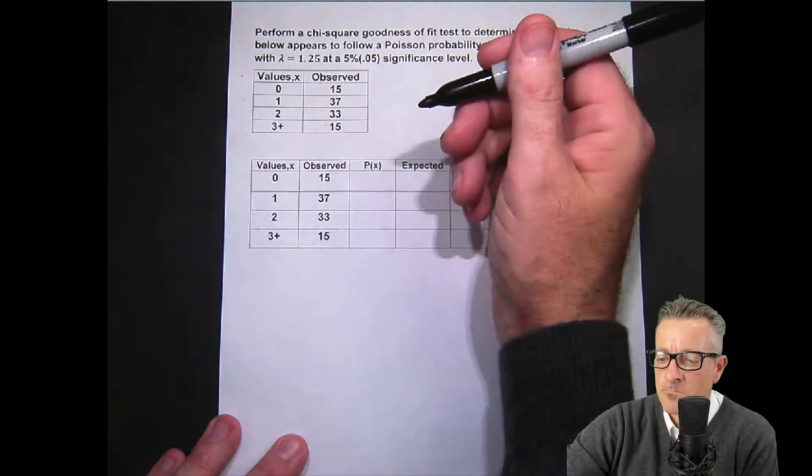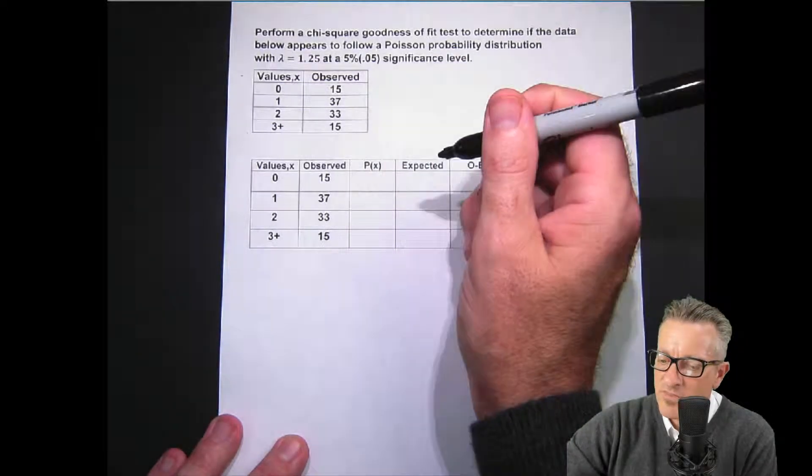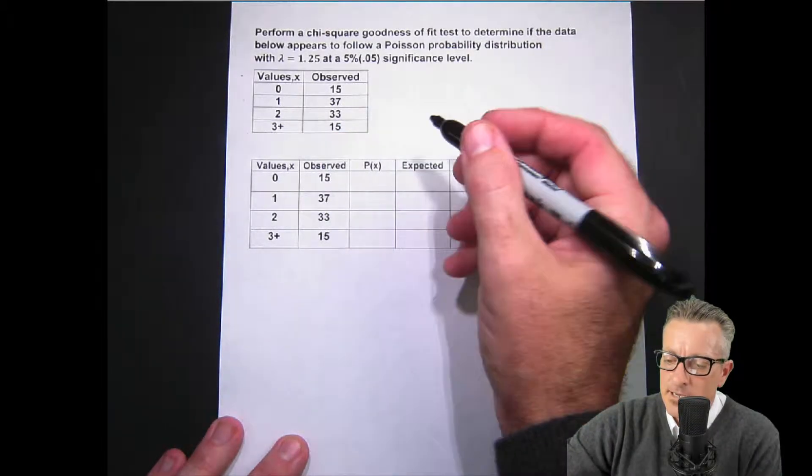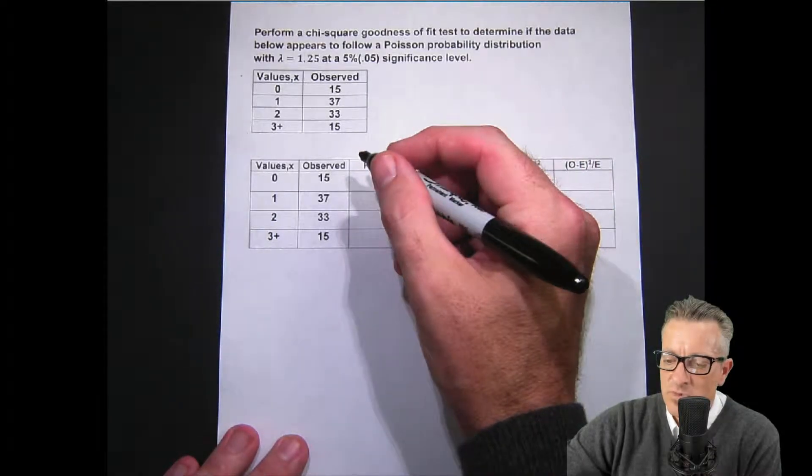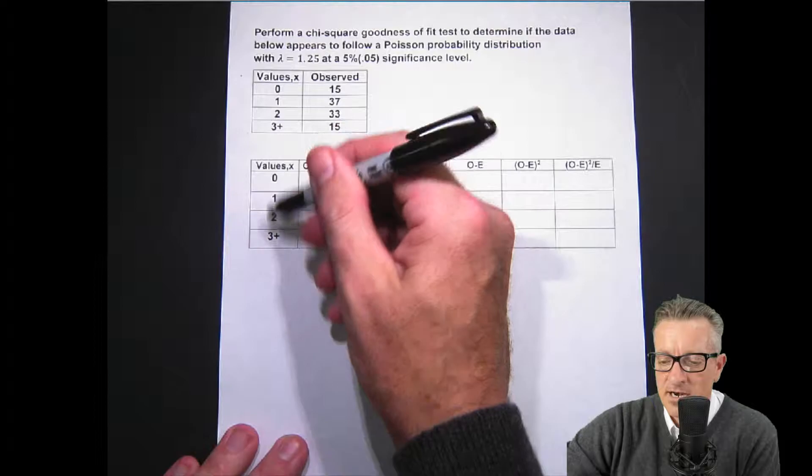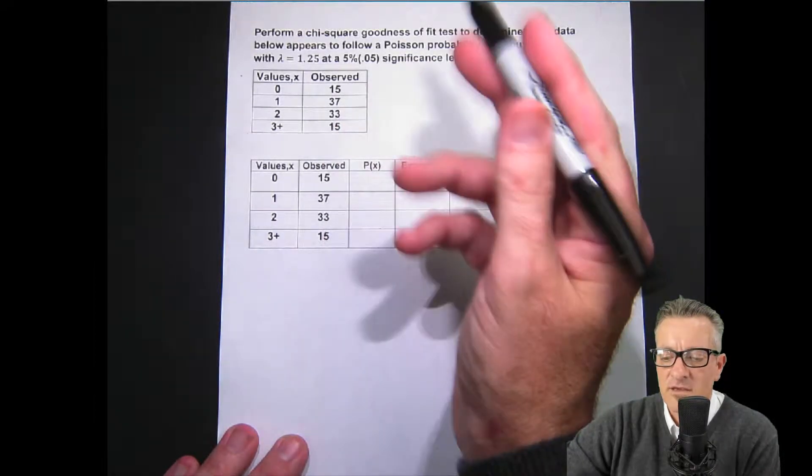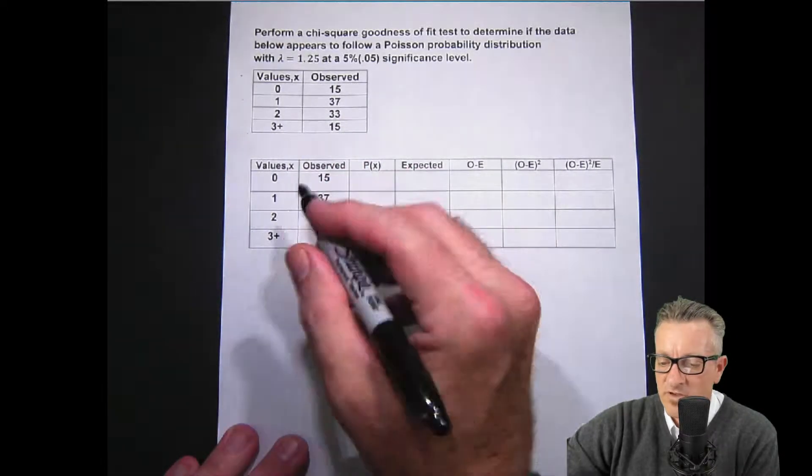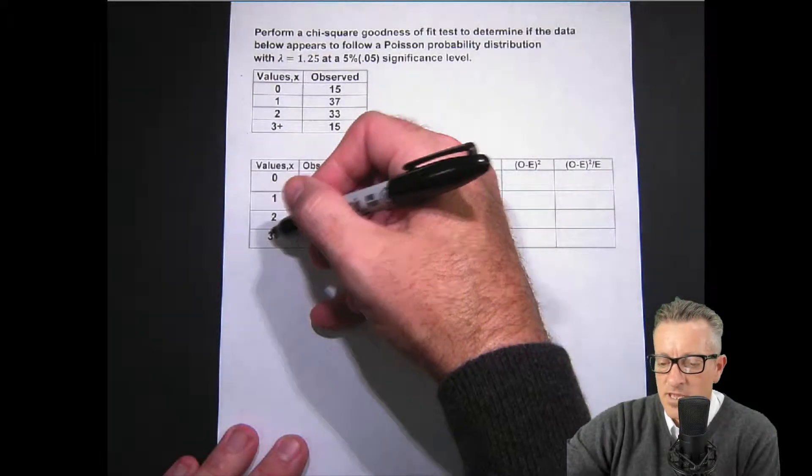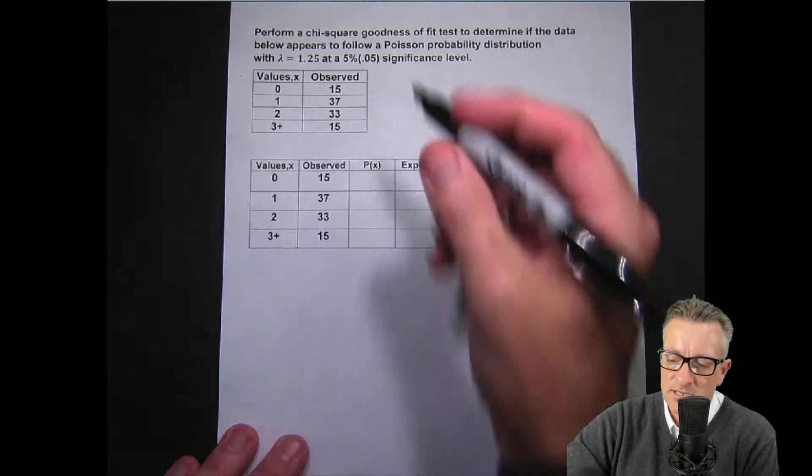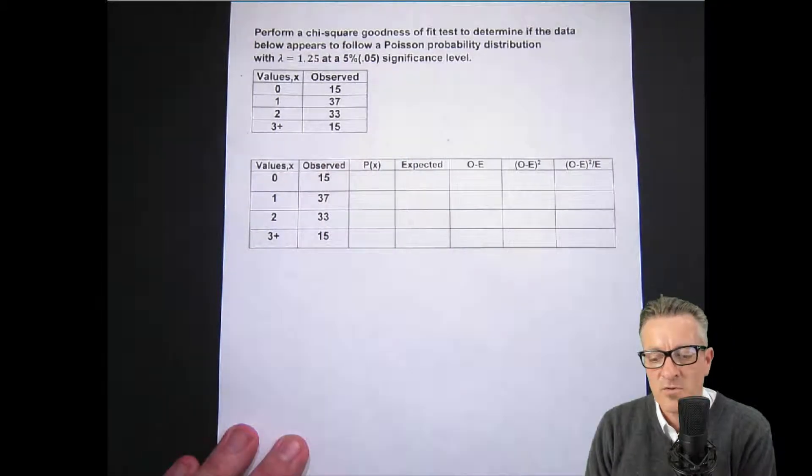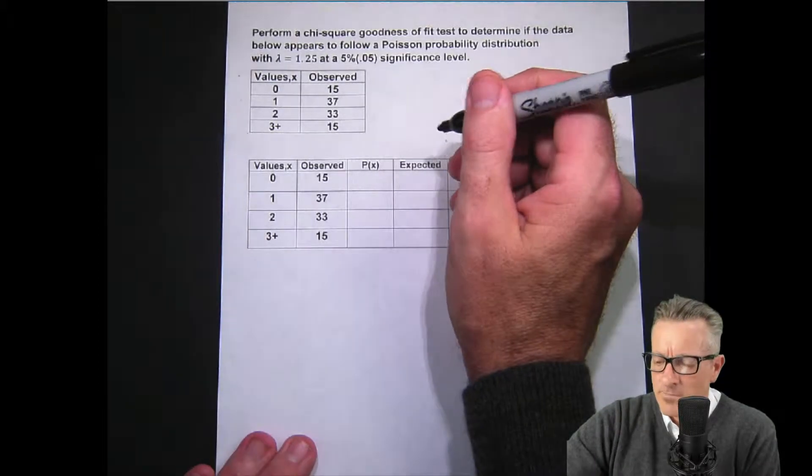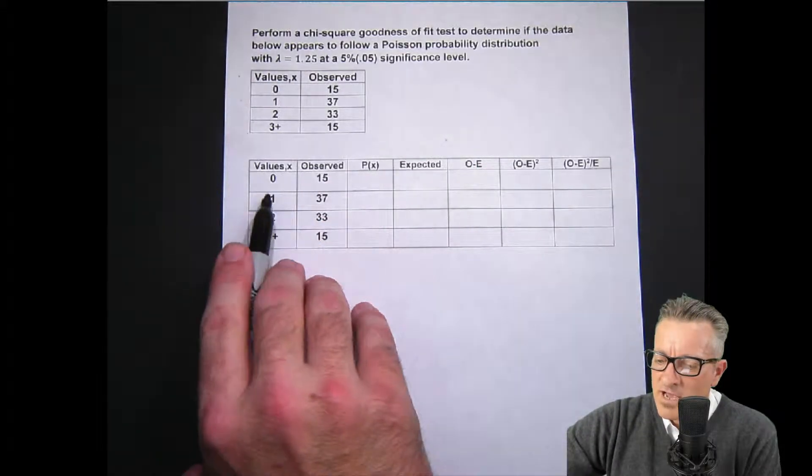The most difficult part about this is finding the probability for the Poisson distribution. It's a little bit of a task in itself because you have to remember how to do this part of it and then apply it to the chi-square. The other thing is we have 3 plus here, which means we have to find the probability for 3 and everything else above it. Now it's not that difficult, but usually by the time you start doing chi-square, the Poisson distribution was a little while ago, so you have to remember how to do that.